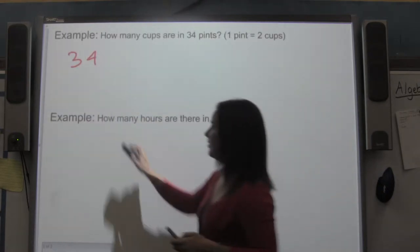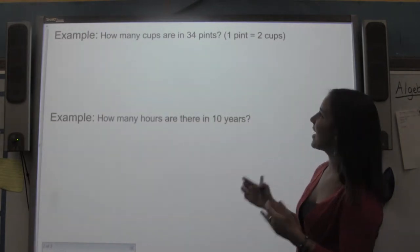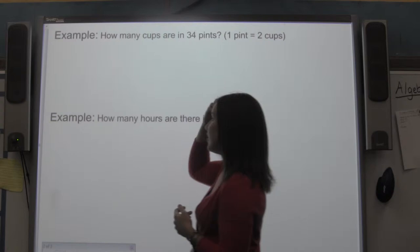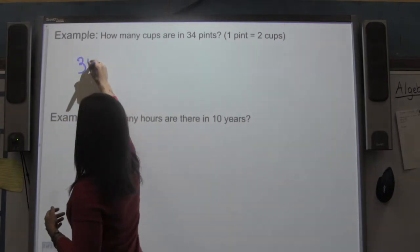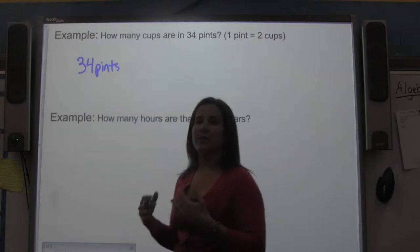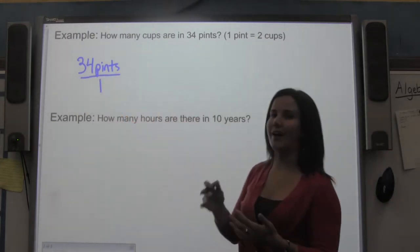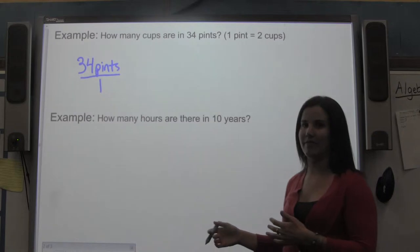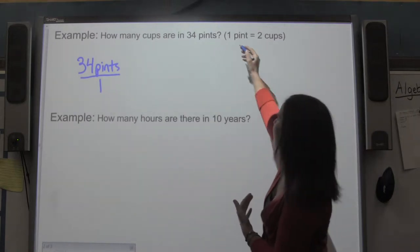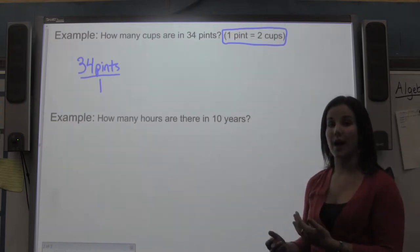Here's an example: how many cups are in 34 pints? I'm going to start with 34 pints and put it over 1, because I need a fraction to multiply fractions. I'm given that 1 pint is equal to 2 cups.